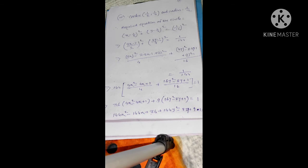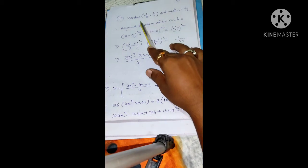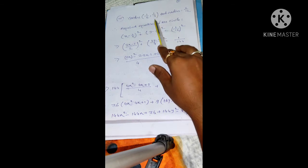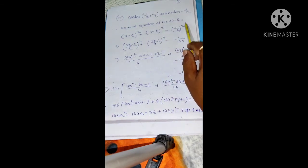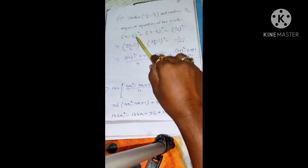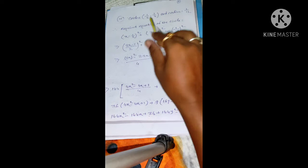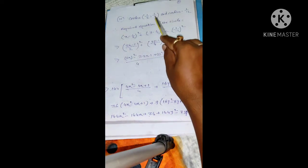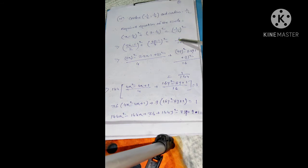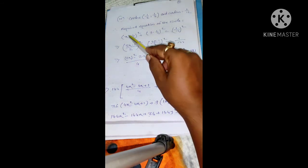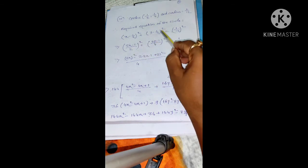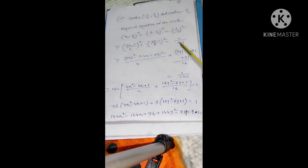Sometimes the center coordinate may be given in fraction form, and in such problems one usually faces difficulty in calculation. The process remains the same, but we have to be very careful. Here the coordinate of the center is (1/2, 1/4) and the radius is 1/12. So the equation will be (x minus 1/2) squared plus (y minus 1/4) squared equals (1/12) squared, which equals 1/144. Taking LCM, (2x minus 1)/2 squared plus (4y minus 1)/4 squared equals 1/144.